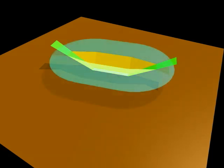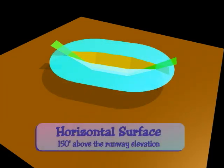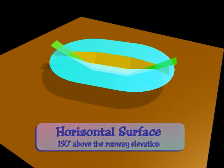The fourth surface is the horizontal surface. This flat surface rests 150 feet above the airport's elevation. Its shape is determined by swinging arcs from the center of the end of the primary surface for each runway end. In this case, the radius used is 5,000 feet.